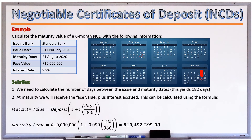Substituting the values into the formula: the deposit is 10 million rand, the interest rate I is 9.9%, and there are 182 days over 366, giving us a maturity value of 10,492,295.08 rand.